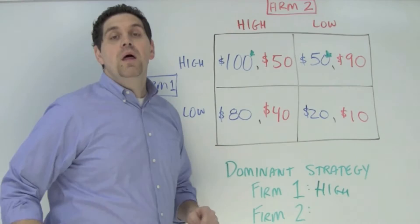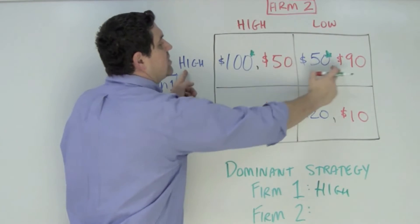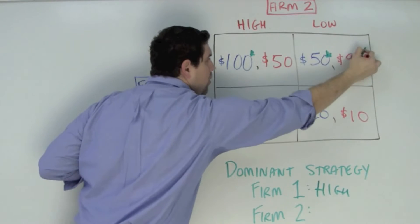That answers the question, but let's check out firm two. If firm one prices high, firm two can choose between $50 and going low and getting $90. Which one would they rather have? They'd rather go low and get $90.